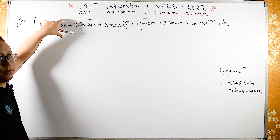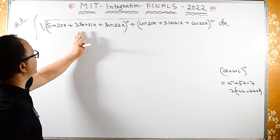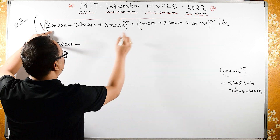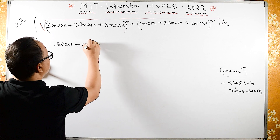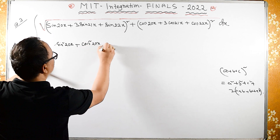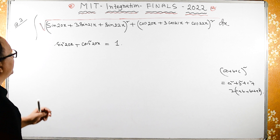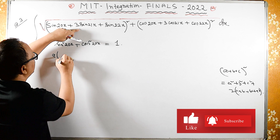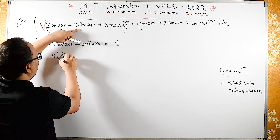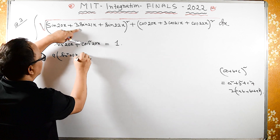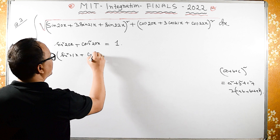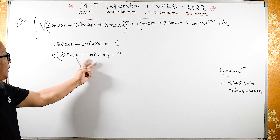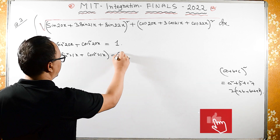Now let us forget about square roots for now. Let us consider we have sin²(20x) plus cos²(20x), which equals 1. Similarly, we will get the term with 3, so 9: 9 times sin²(21x) plus cos²(21x).